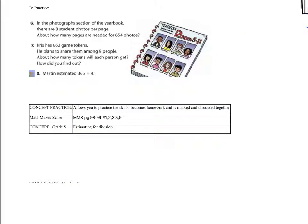All right, and now we're moving on to the concept practice. Page 98 and 99, numbers 1, 2, 3, 5, and 9, estimating for division. Remember to use your multiplication facts to help you. You may use a multiplication table if you need. You may not use a calculator at any point within this unit. You may use a multiplication table for this portion. Remember, if you have questions along the way, that you please ask.